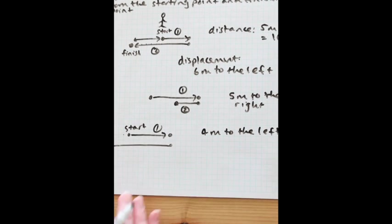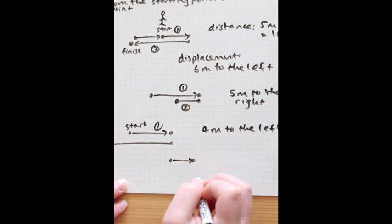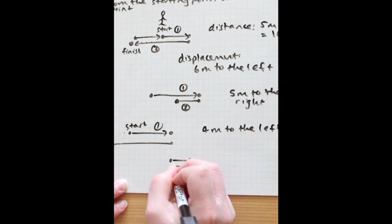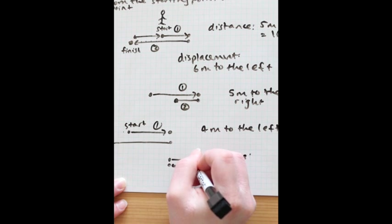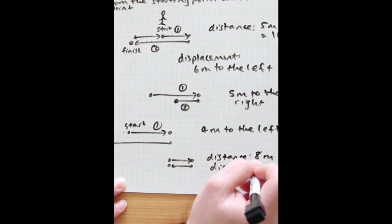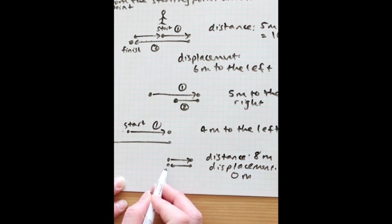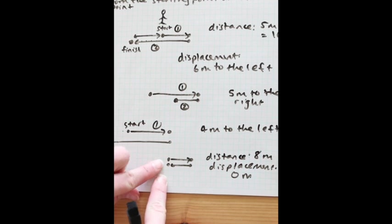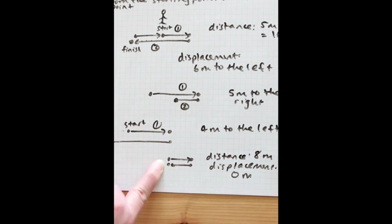The last sort of example you need to be aware of is that distance and displacement can be really different if a person totally goes back on themselves. So let's say a person starts from this point, walks to this point, and then walks all the way back to where they started. The distance would be four plus four, so it would be eight meters. But their displacement would actually be zero meters because they haven't moved at all in terms of the difference between start and finish. Since they're finishing exactly where they started, the displacement is zero.